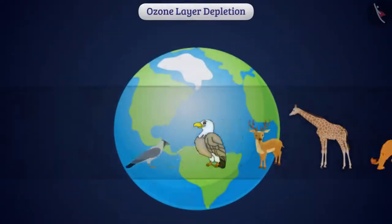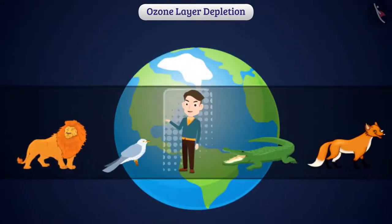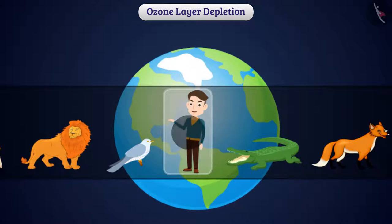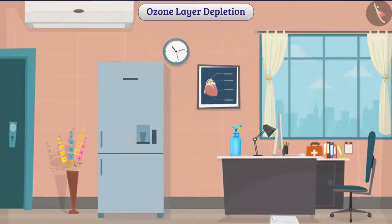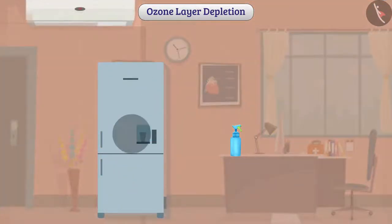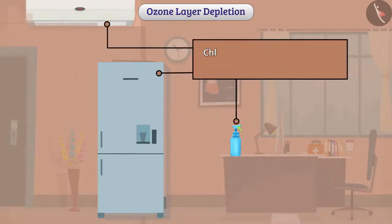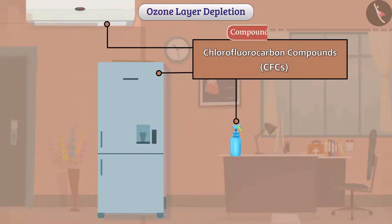Like other organisms, we are also a part of the environment. Our activities cause change in the environment. To ease our life, we have manufactured items like refrigerators, air conditioners, spray aerosols, etc. In these items, often, the synthetic chemicals, such as chlorofluorocarbon compounds, i.e. CFCs, are used, which are compounds of chlorine.